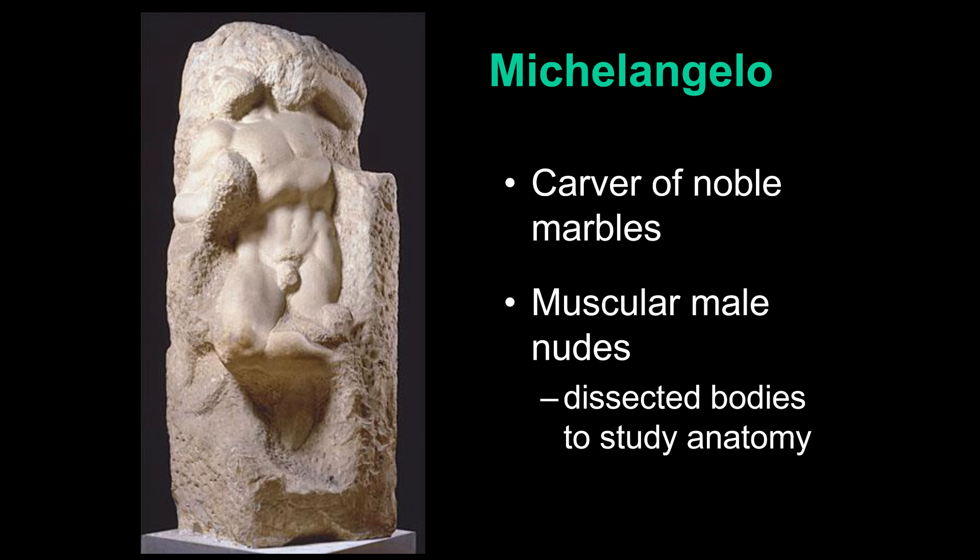We're looking at one of his unfinished works — a figure that was supposed to adorn a very elaborate, freestanding tomb of Pope Julius II, who was an important patron for Michelangelo. Julius had commissioned this huge tomb, which was not completed. After he died, just certain bits and pieces were put together with a much reduced wall tomb in the church of San Pietro in Vincoli.